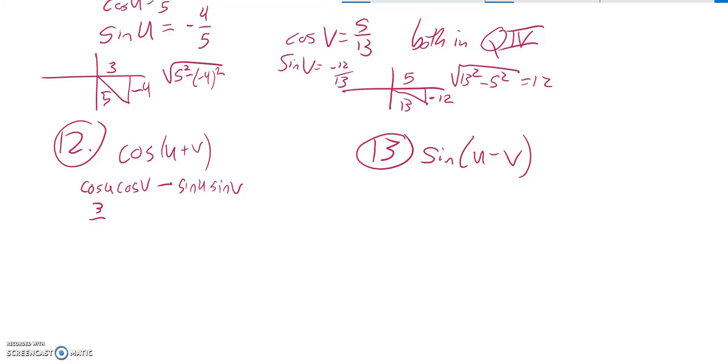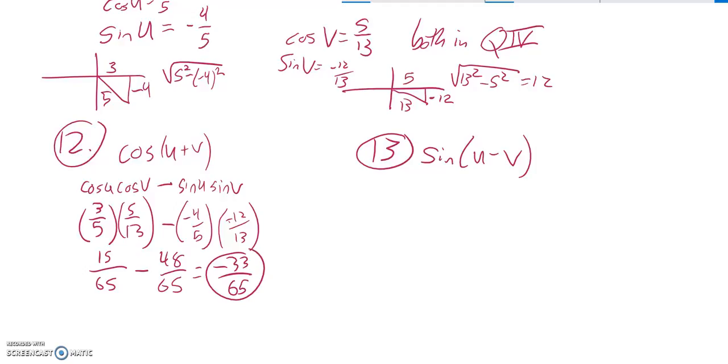Cosine of u is 3 fifths, cosine of v is 5 thirteenths, and that's minus. Sine of u is negative 4 fifths, sine of v is negative 12 thirteenths. So here I have 15 over 65 minus—a negative times a negative is positive—48 over 65. If I add those together, 15 minus 48 is negative 33, so negative 33 sixty-fifths. There's my answer to 12.